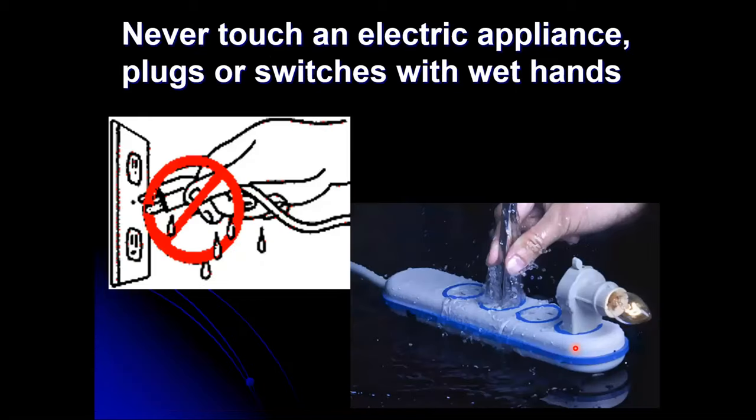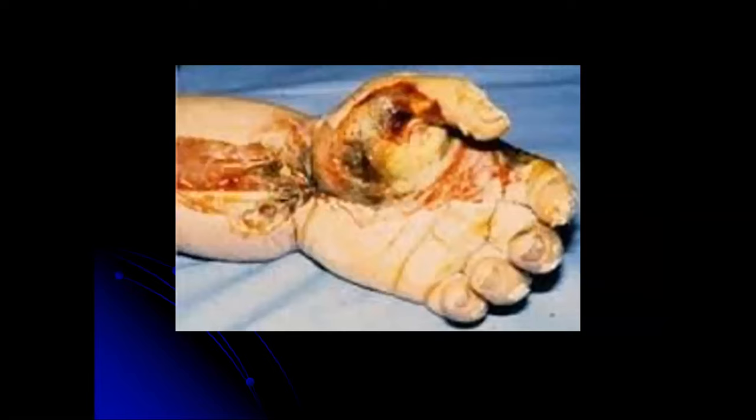Number two, never touch an electric appliance plugs or switches with wet hands. When the body is wet, it becomes a better conductor of electricity. More current will then flow through the body if there is leakage of current in the appliance. This can result in a severe shock. Water is the best conductor of electricity. So that means that electricity can flow through the water. So you get your hands burned like this. This might be possible if you touch any electric appliances with wet hands.